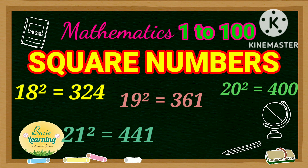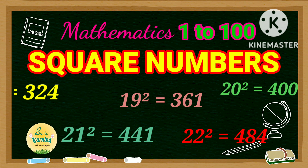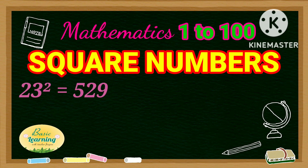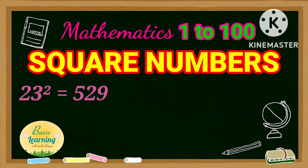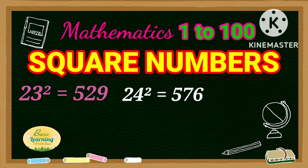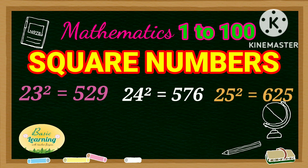Square of 21 is 441. Square of 22 is 484. Square of 23 is 529. Square of 24 is 576. Square of 25 is 625.